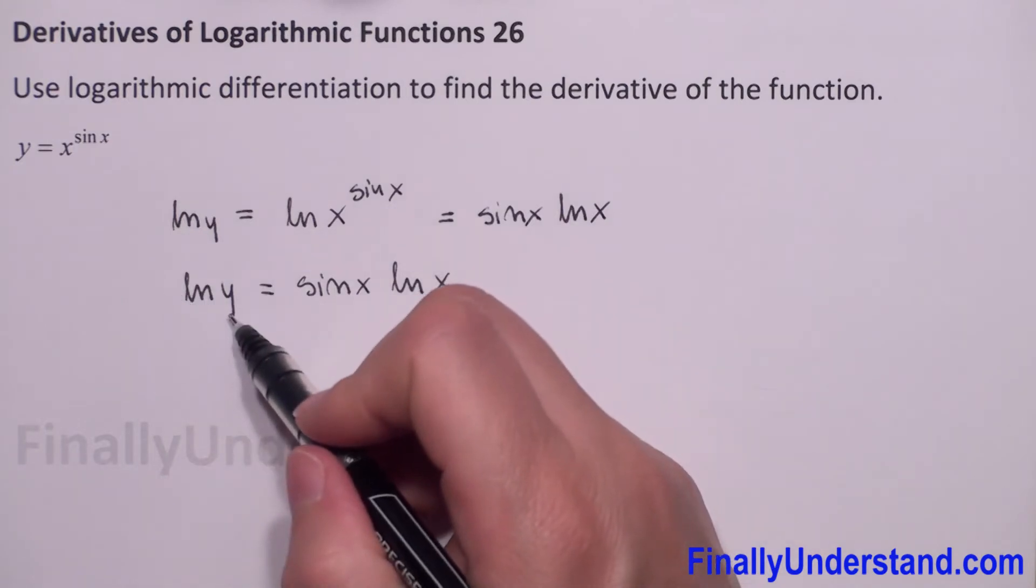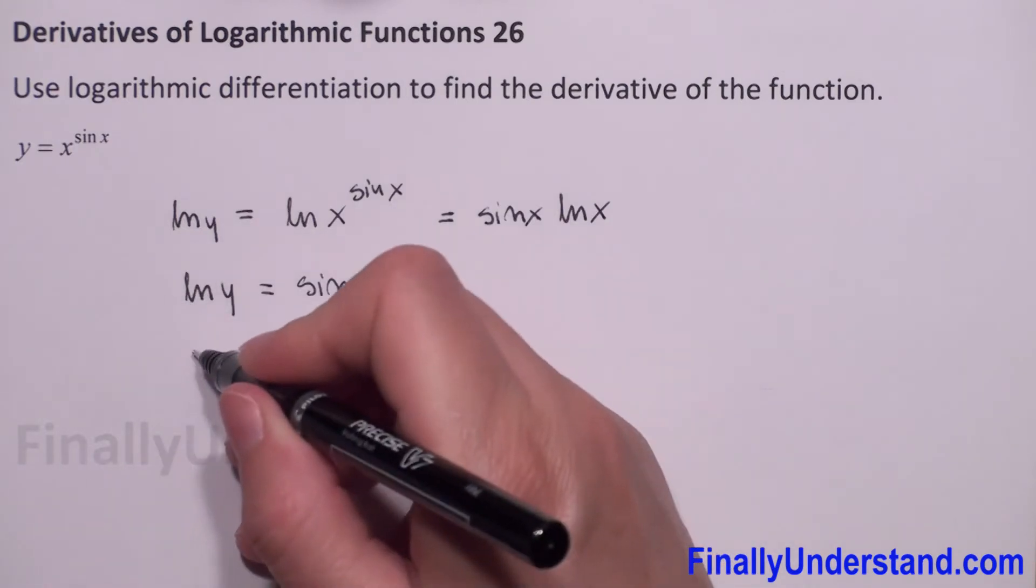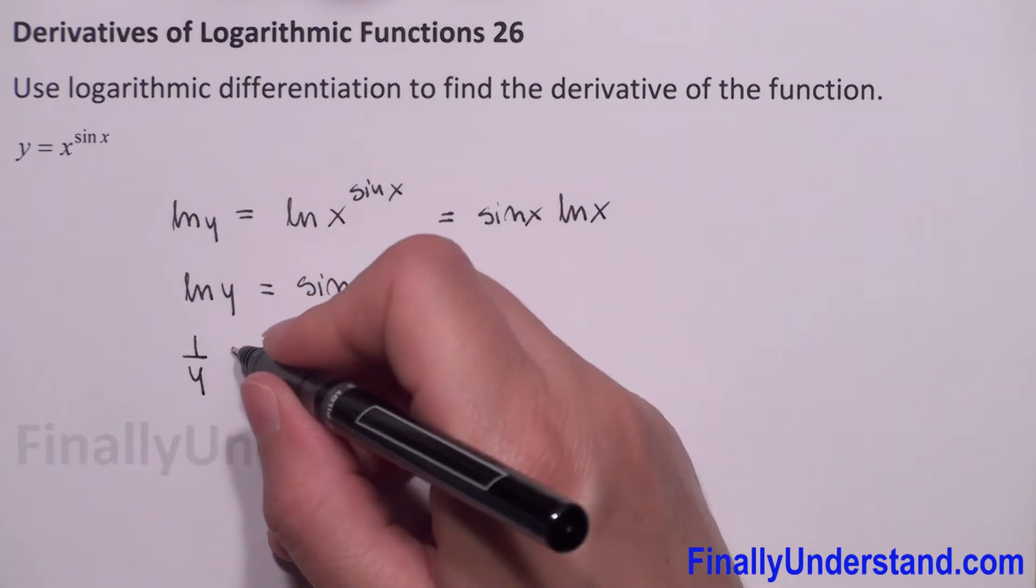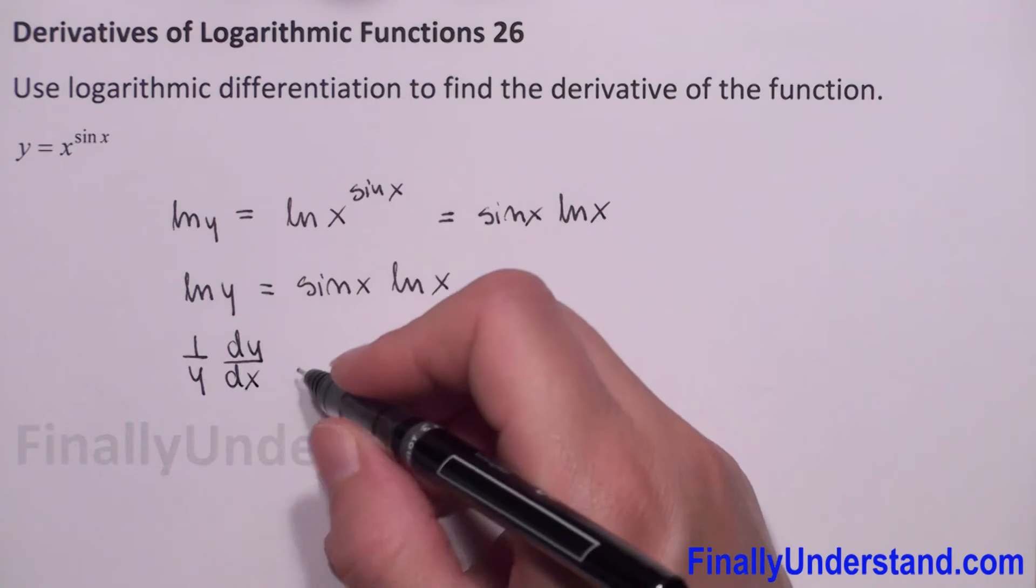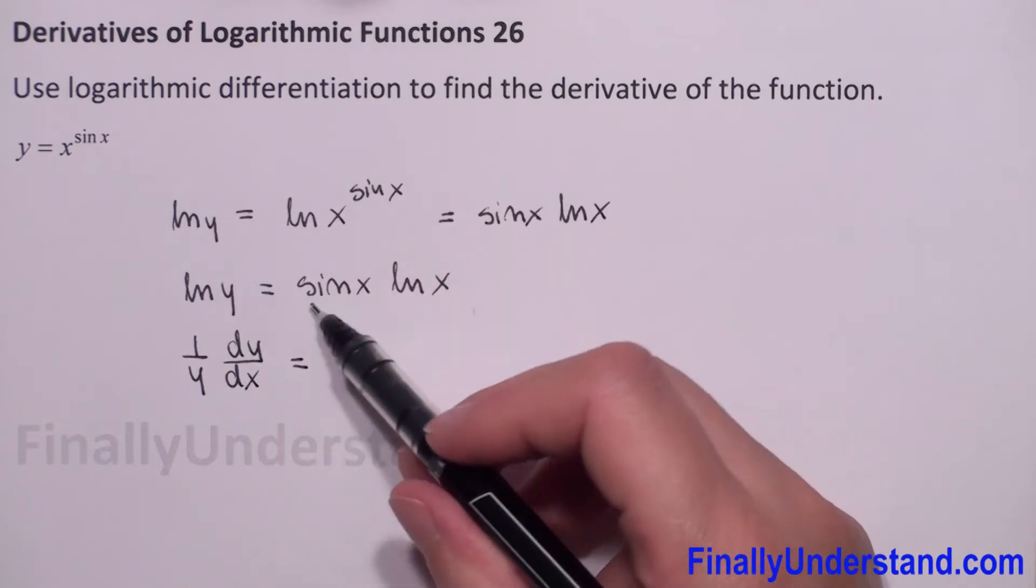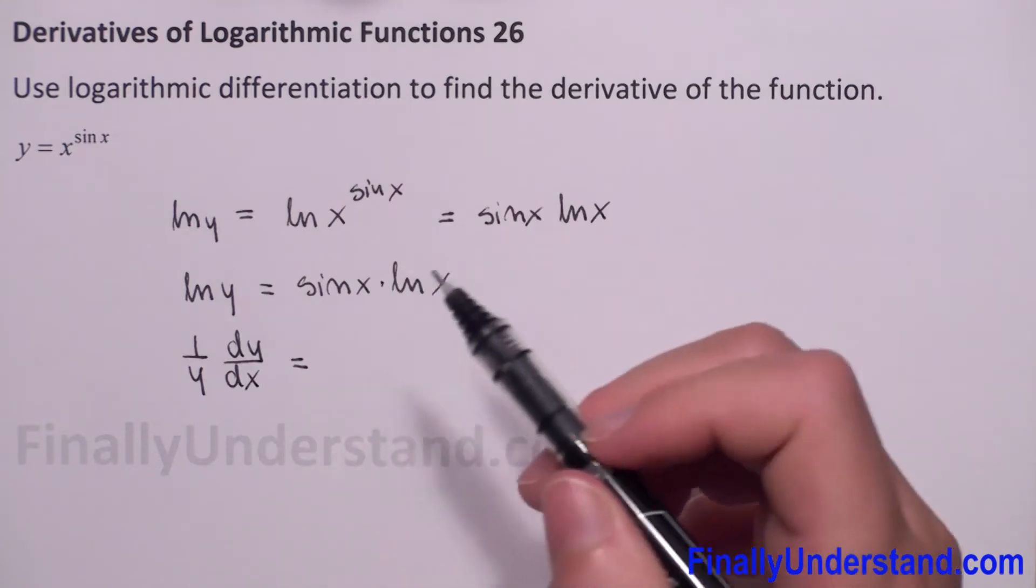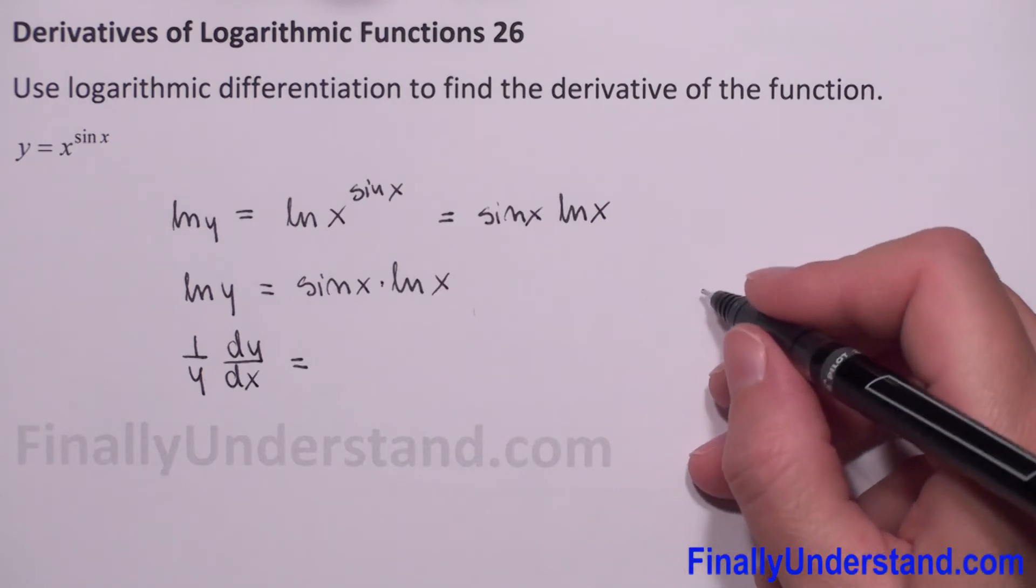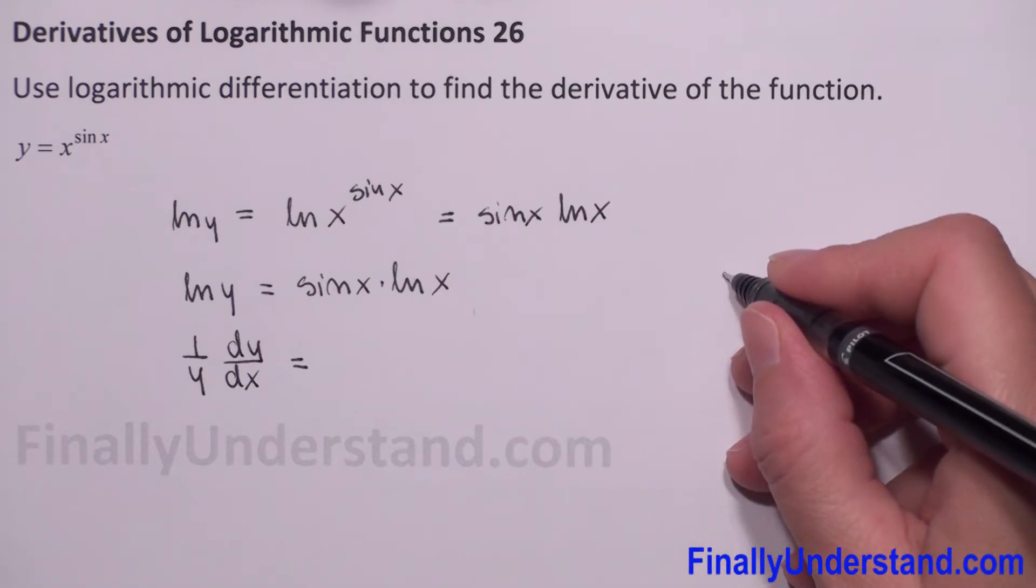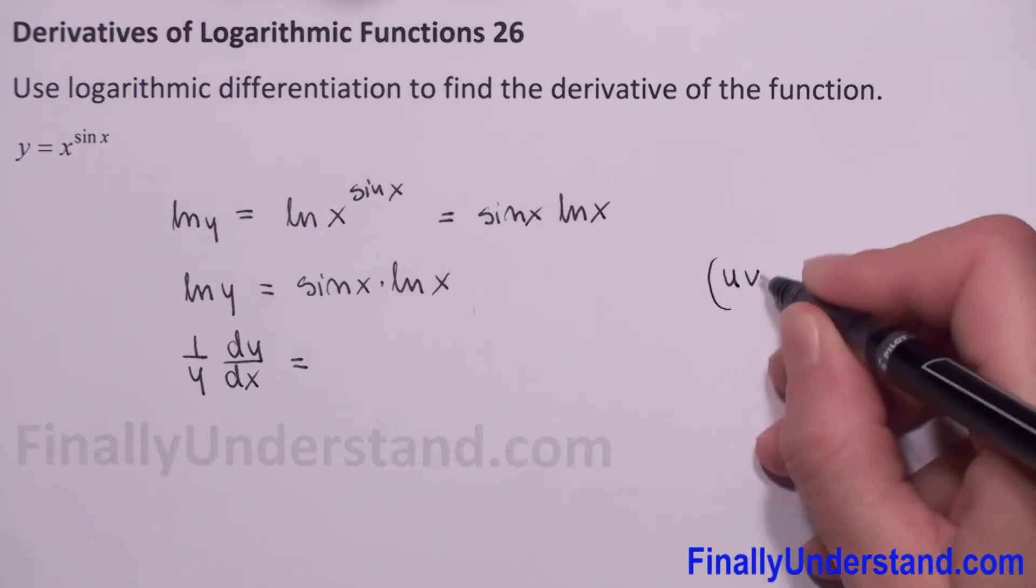So derivative of natural log of y is 1 over y times dy to dx. This is equal, on the right side we have multiplication, so we have to use product formula. Let me remind you, when we have u times v prime, this is equal u prime times v plus u times v prime.